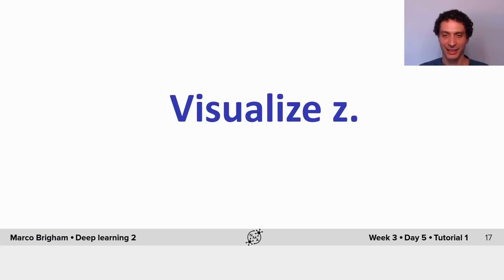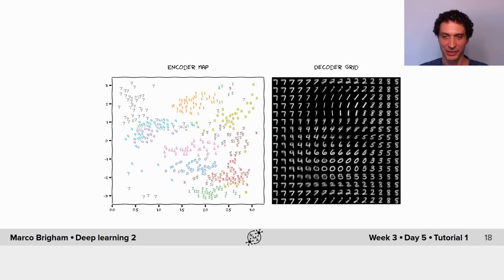But how can we visualize z, the bottleneck layer representation? For this we introduce two plots: the encoder map and the decoder grid.